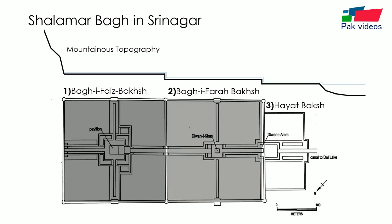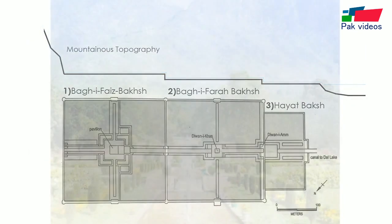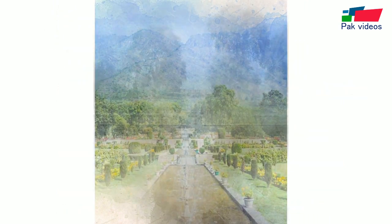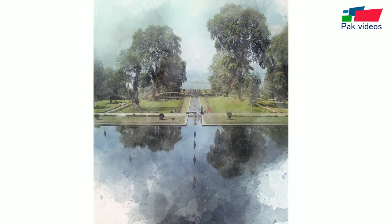The middle terrace, Baghi Farau Baksh, had a more public function, including an audience hall. The lowest and most public level had the Diwani Ahm, a hall of public audience. This garden had a mountainous topography, which helps its water naturally rush in torrents to animate the garden.